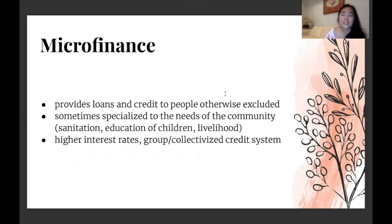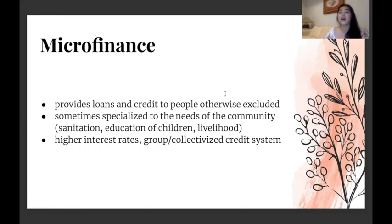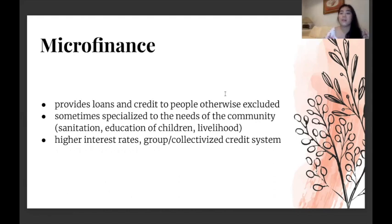Microfinance provides loans and credit to people otherwise excluded from formal banking. Formal banking has barriers many poor individuals cannot reach — documentation, credit history, having a baseline amount of money to keep with the bank. Some microfinance institutions specialize in community needs — in Central and South Asia, for example, geared toward sanitation, children's education, or individual livelihood. They tend to have higher interest rates because these individuals don't have a credit score, making it higher risk. Therefore slightly higher interest rates are justified, and they tend to use group or collective credit systems within those communities as a method to make collection easier.